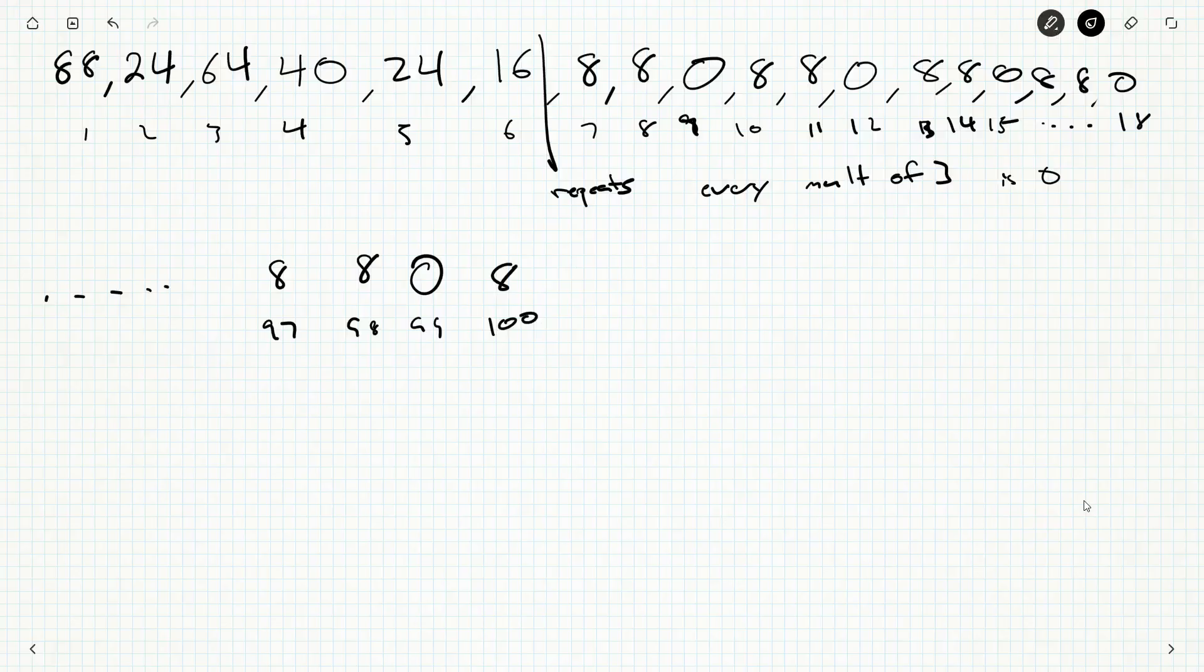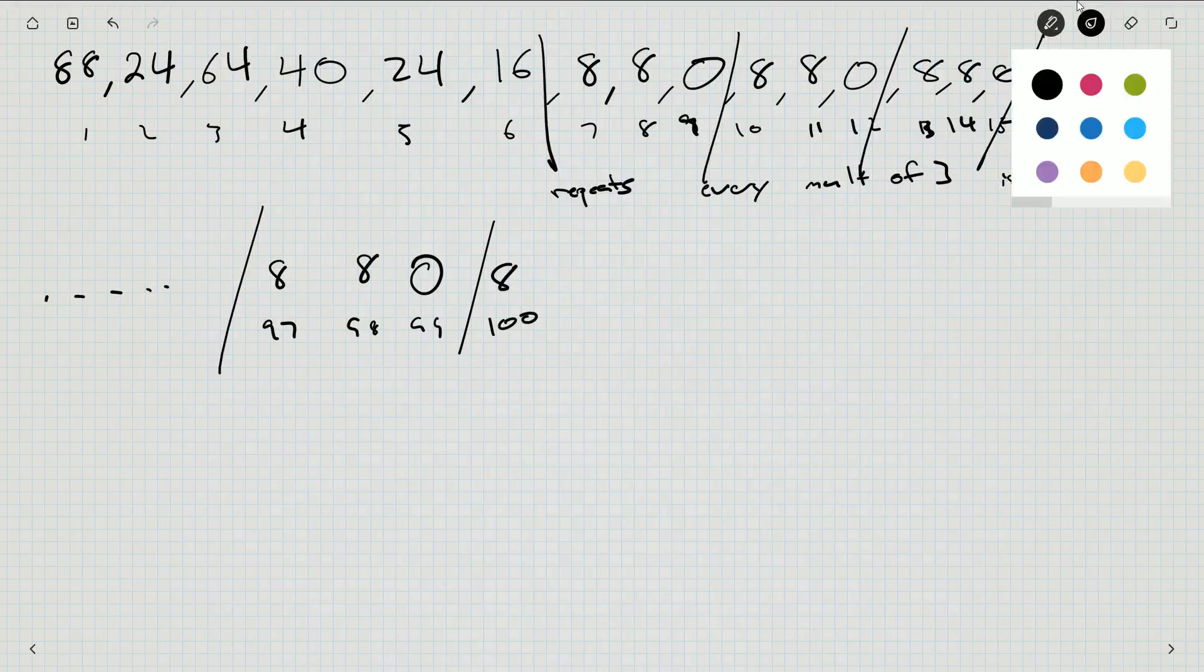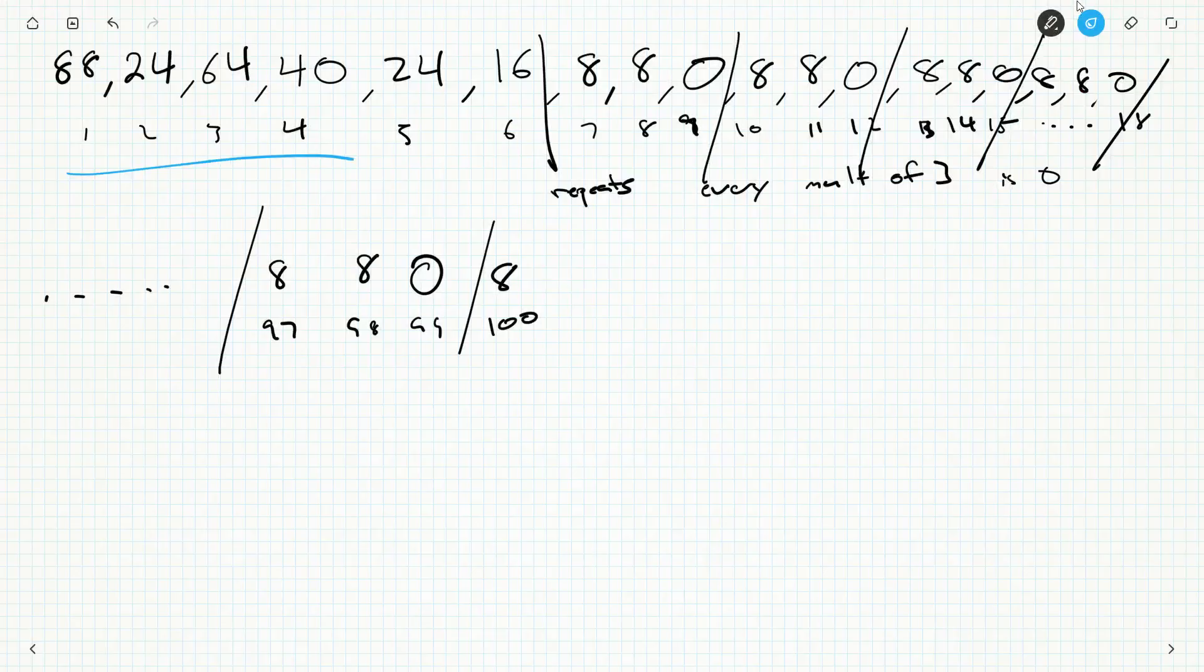All right, but we want the sum here. So let's break it down into counting how many repeats there are and then adding up everything other than the repeats. So the non-repeats are everything here, so 88 plus, I'm gonna grab my calculator for this, 88 plus 24 plus 64 plus 40 plus 24 plus 16 plus this 8 down here.